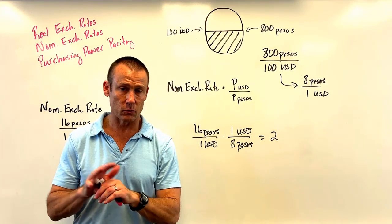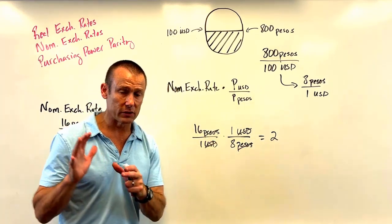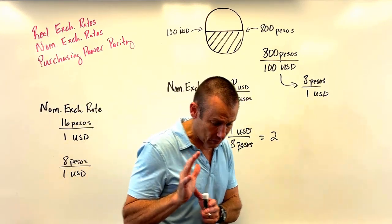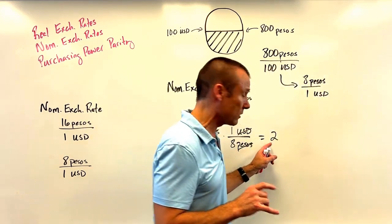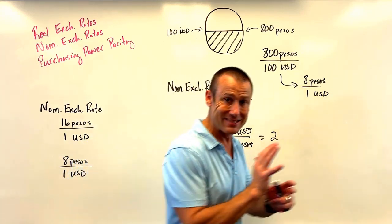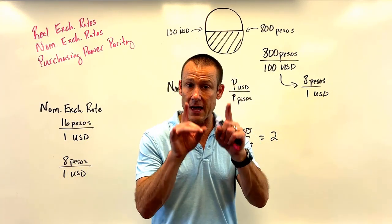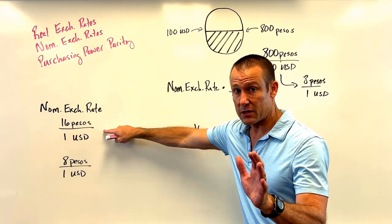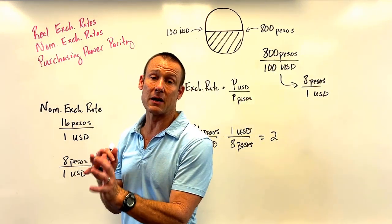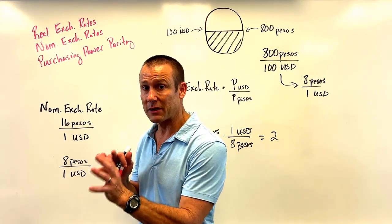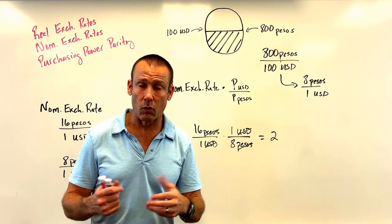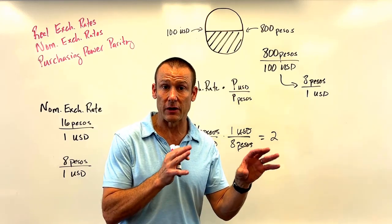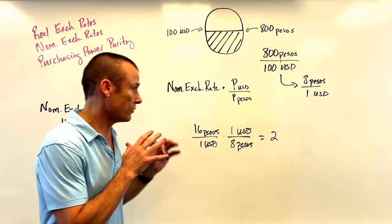The real exchange rate of 2 means a US consumer's purchasing power doubles when going into Mexico. Conversely, for someone from Mexico going to the United States, their purchasing power is cut in half — their real exchange rate is one half. That's their real exchange rate: the peso-to-dollar rate versus the dollar-to-peso rate.